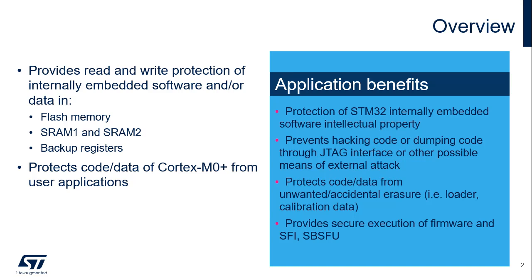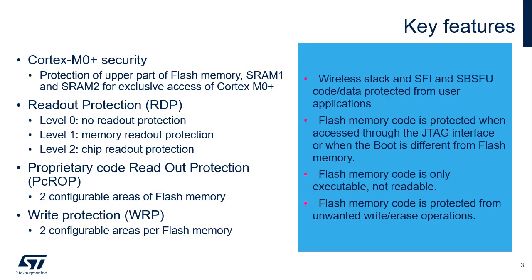STM32 WL5 microcontrollers provide several features for protecting code and/or data located in either flash memory, SRAM1, SRAM2, or backup registers. These features can prevent the reading or writing of code and/or data through the JTAG debugger, end-user code, or SRAM Trojan code. A new protection memory feature is dedicated to the application firmware running on the Cortex-M0 Plus core, which has exclusive access to the protected segments.